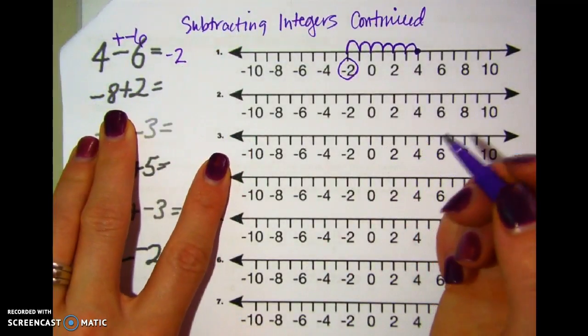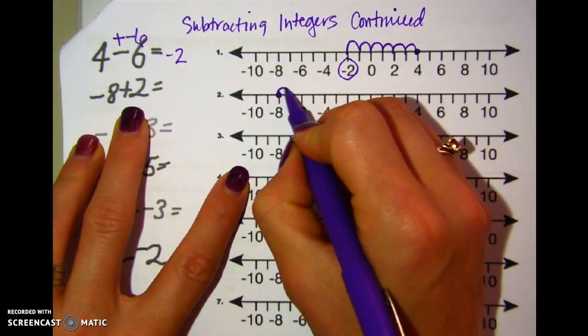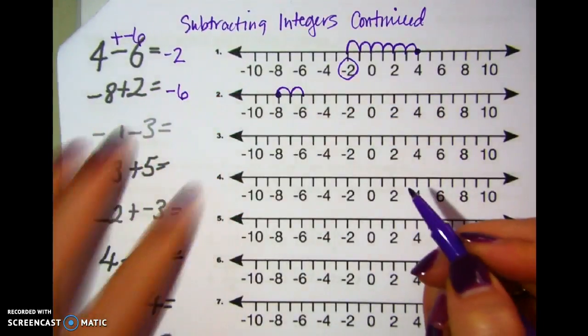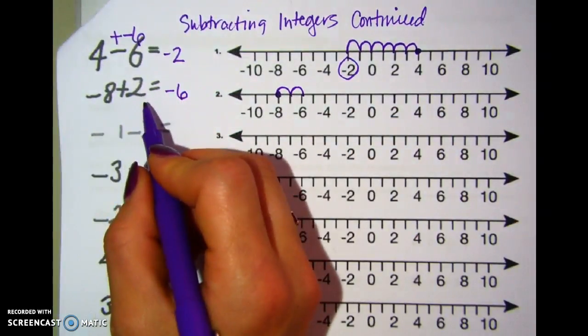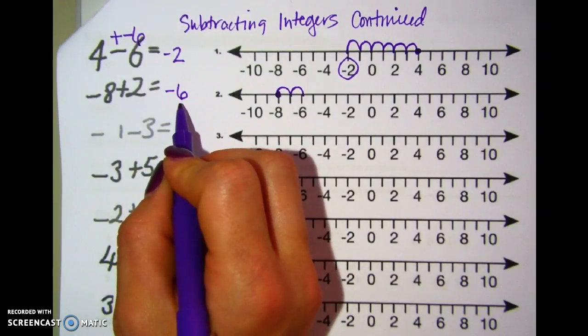If I have negative 8, so starting at negative 8 and adding 2, adding 2 we're going to move to the right, and I end up at negative 6. So that was a positive and a negative. I end up subtracting to get the 6, and I'm still in the negatives, negative 6.